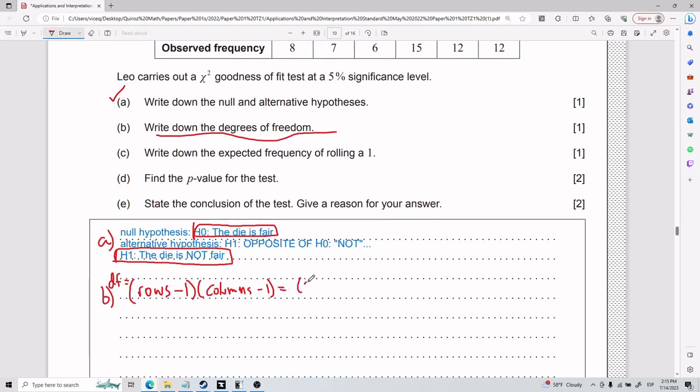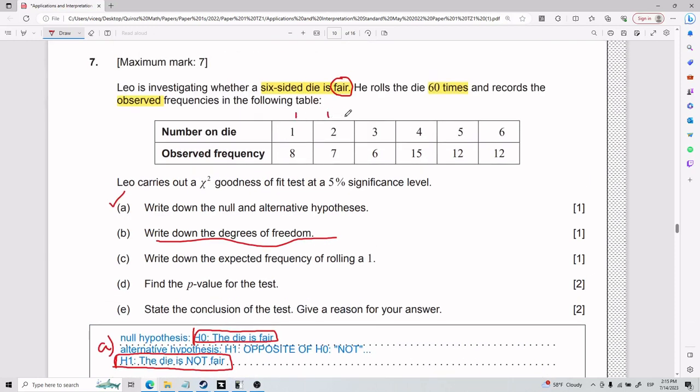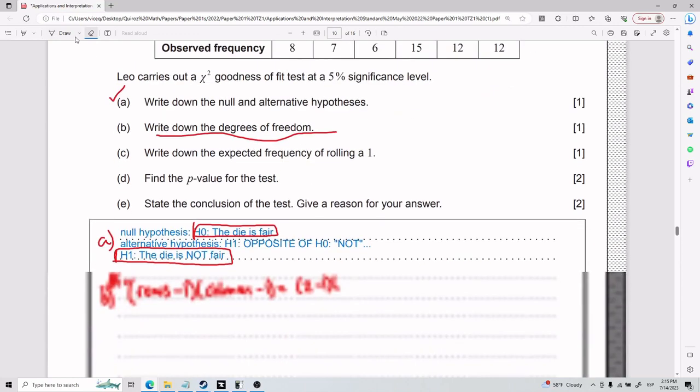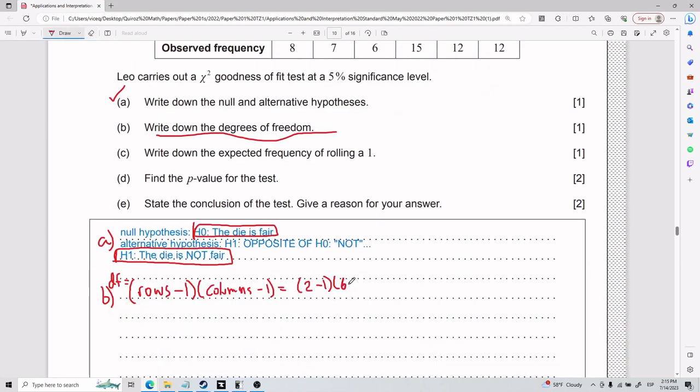So how many rows do I have? I have two minus one. How many columns do I have? I have one, two, three, four, five, six. So that means I have six columns minus one. That means I have two minus one is one, six minus one is five, one times five is going to be five. So degrees of freedom is going to be five. That is part B.